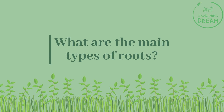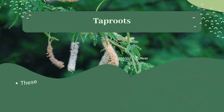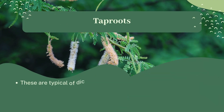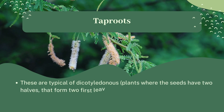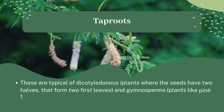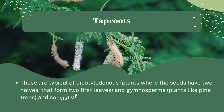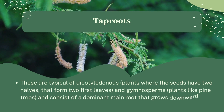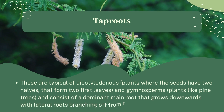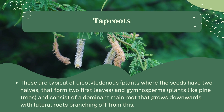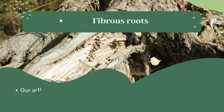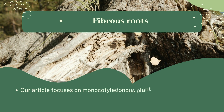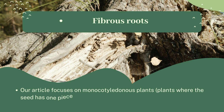What are the main types of roots? Tap roots are typical of dicotyledonous plants, where the seeds have two halves that form two first leaves, and gymnosperms — plants like pine trees — and consist of a dominant main root that grows downwards with lateral roots branching off from it.